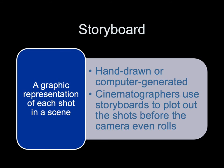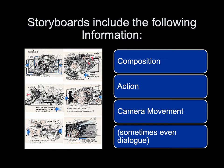A storyboard is a graphic representation of each shot in a scene, either hand drawn or computer generated. Cinematographers use storyboards to plot out shots before the camera even rolls. Here is a very detailed storyboard from the movie Rambo 3. Storyboards include the photographic composition, the action taking place within the shot, the camera movement, and sometimes even dialogue.